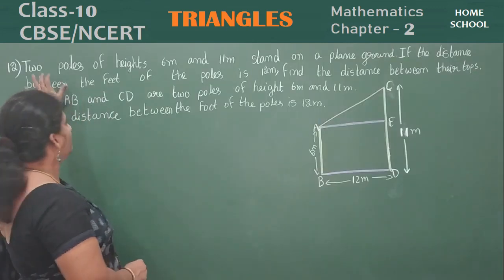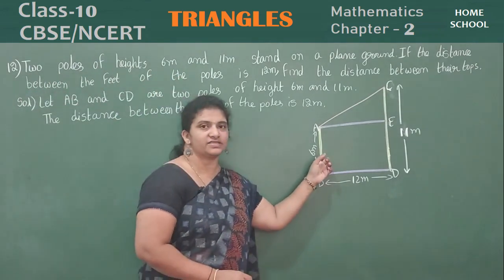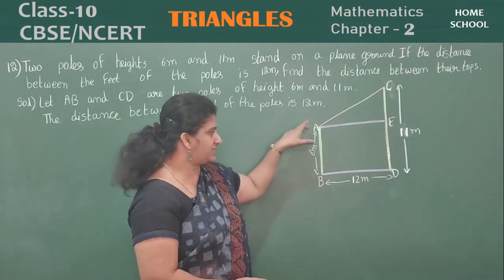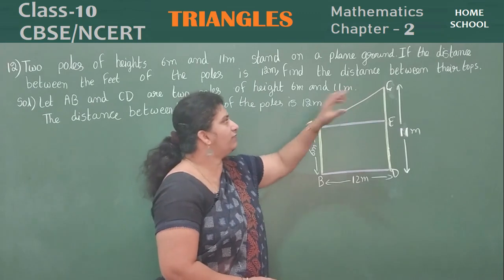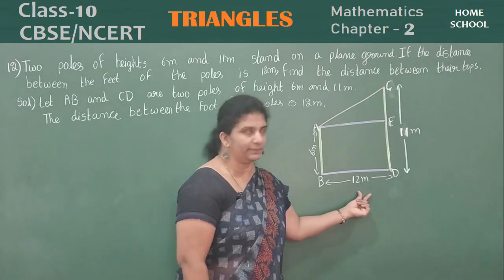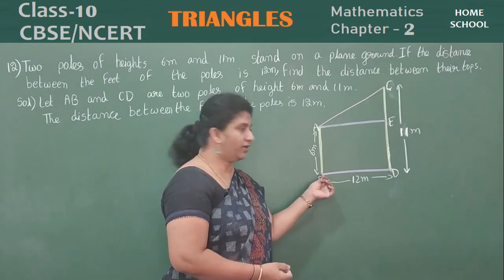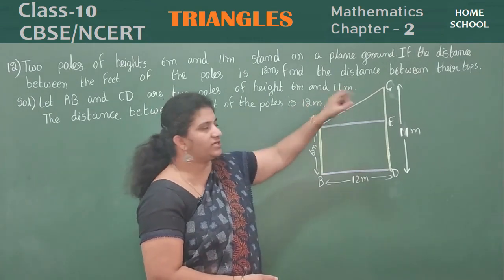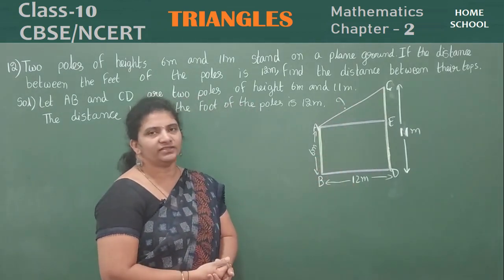Let's see problem 12. Two poles of height 6 meters and 11 meters — you can see them here, this pole and that pole, ABCD — stand on plain ground. The distance between the poles is 12 meters. Find the distance between their tops. The bottom distance from here to here is 12 meters. The top of one pole is A and the top of the other is C. What is the distance AC?